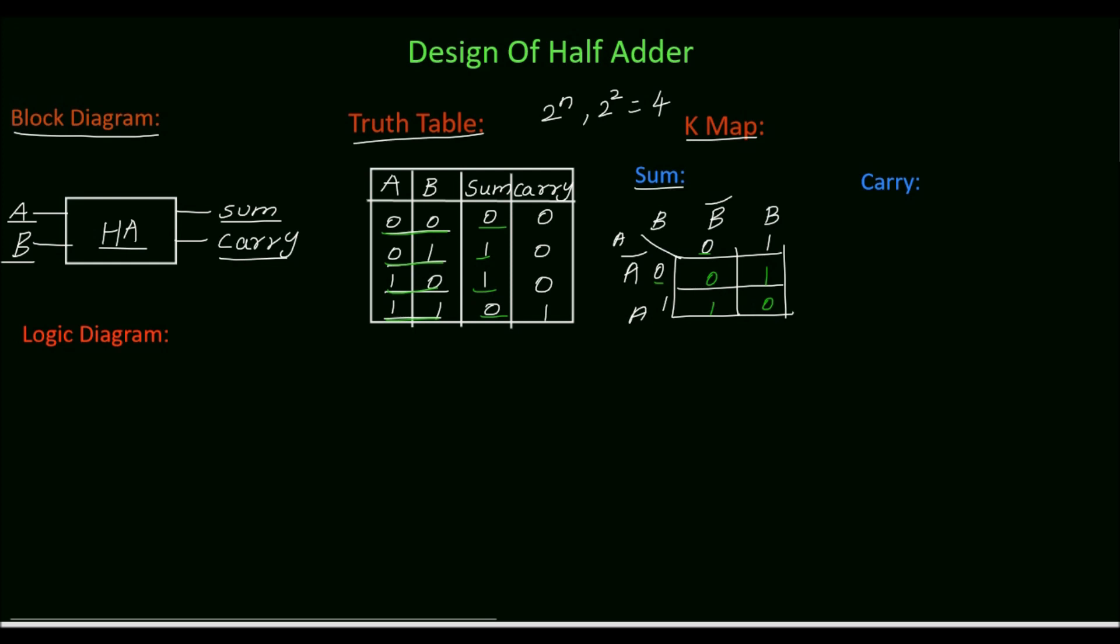In SOP we will group cells which have values 1. Here we have isolated 1s and we cannot make any pair with this 1. So mark this as group 1.